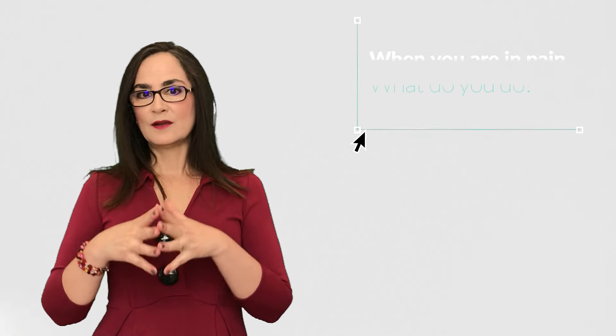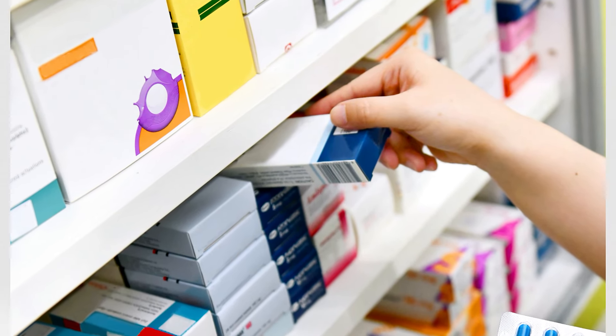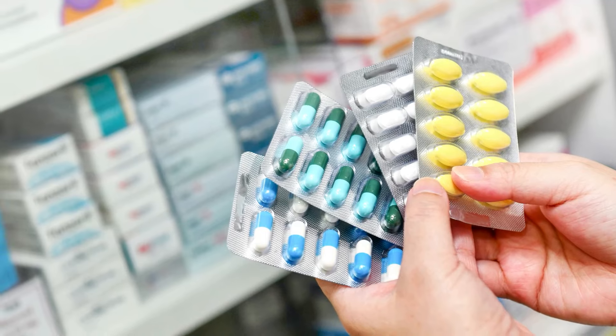A week ago, I posted a question to my YouTube subscribers: 'When you are in pain, what do you do?' And 37% said they take a painkiller medicine, 30% do some exercise, 17% try to distract their mind, and 6% just cry and be miserable. The remaining 9% said a variety of other things like drinking warm water, deep breathing, or taking a hot shower. For the 37% who said they take a painkiller non-prescription medication, this video is for you. There are dozens of different types of NSAIDs, usually sold over the counter, but some require a physician's prescription.